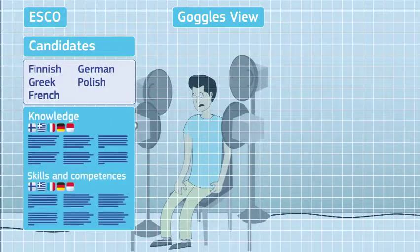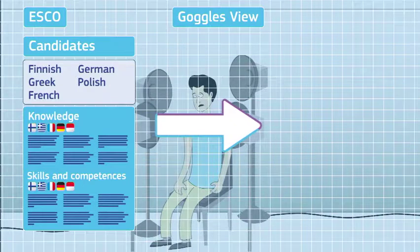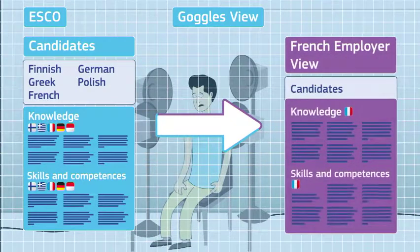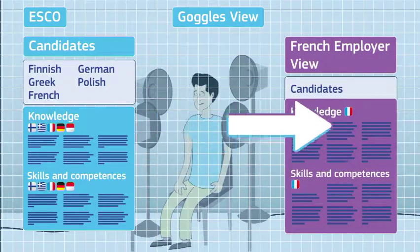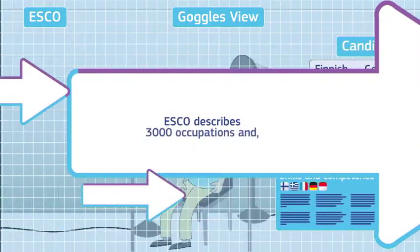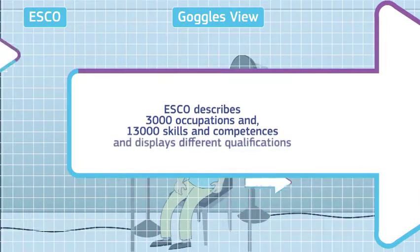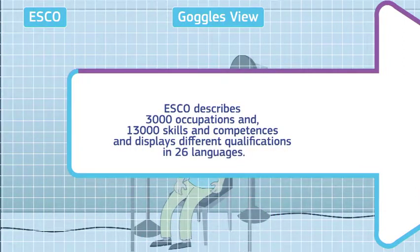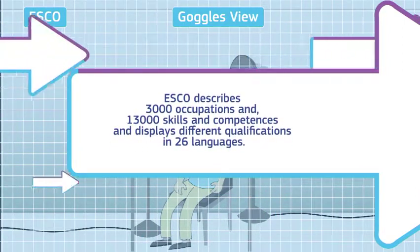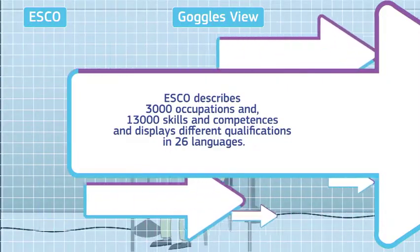Using the common language of ESCO, employers can assess CVs from different European countries, regardless of where they come from. ESCO describes 3,000 occupations and 13,000 skills and competences and displays different qualifications in 26 languages and makes CVs and job vacancies more transparent.